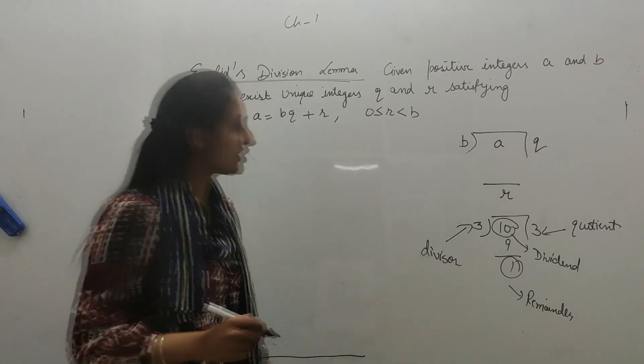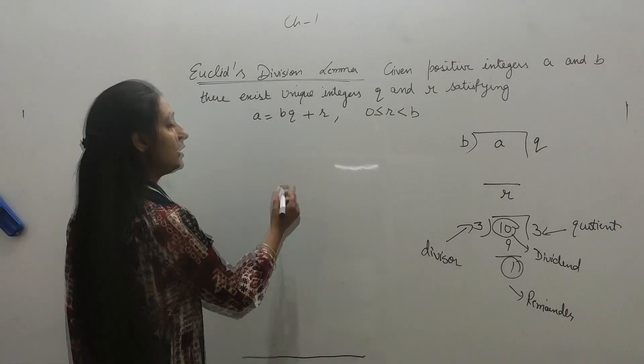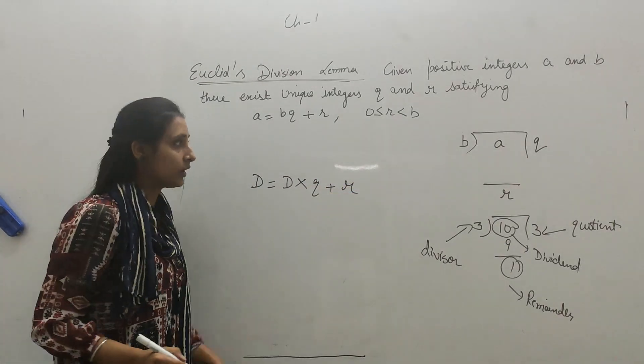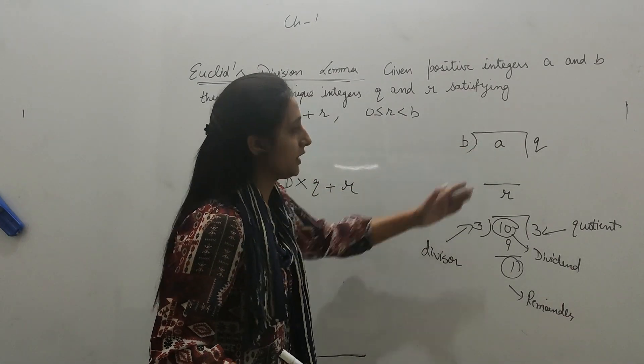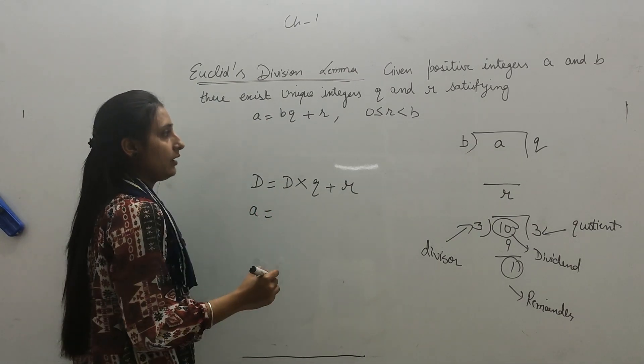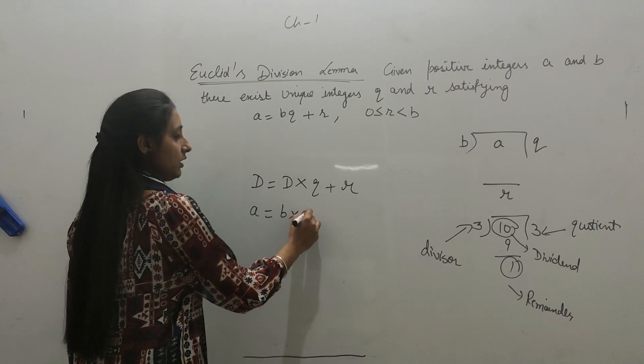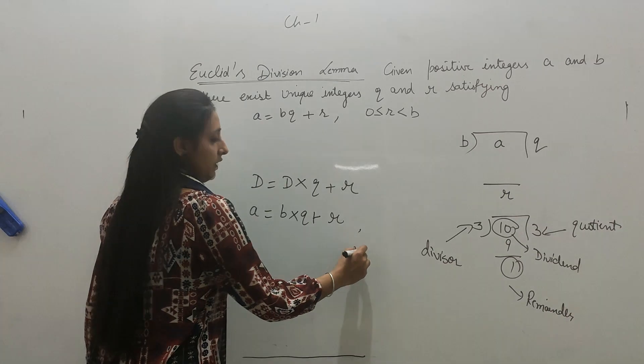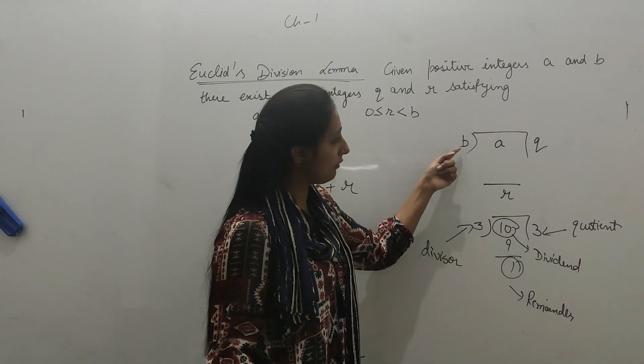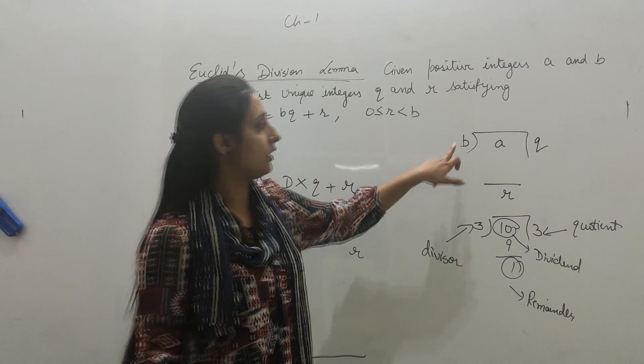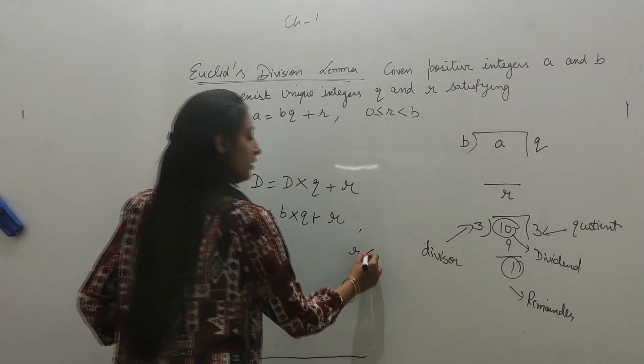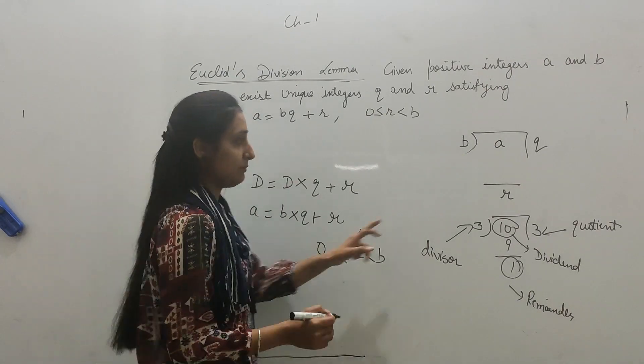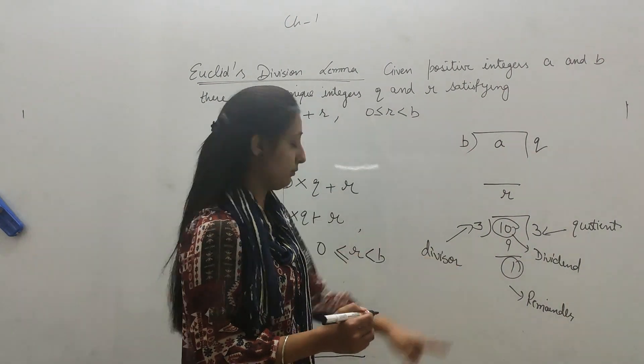In junior classes, when we do the checking, what was the formula? That was the dividend equal to divisor into quotient plus remainder. Now what is dividend here? Dividend is A, and divisor is B, and quotient Q plus remainder is R. And where R? R is always less than B, less than B means less than divisor, but it is greater than or equal to zero. It may be zero or greater but always less than B.